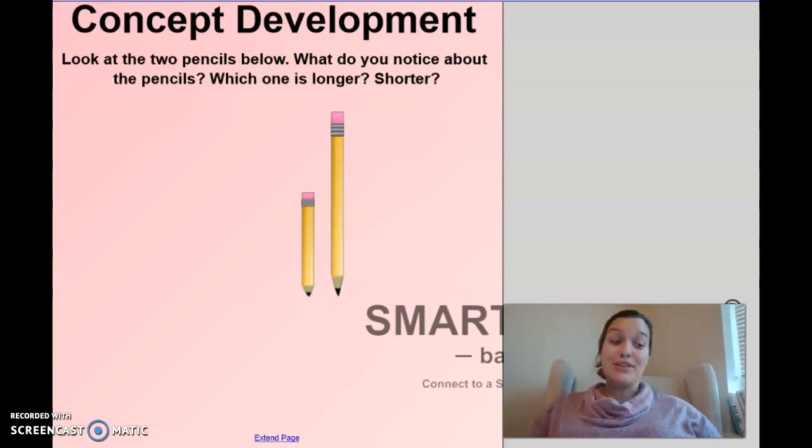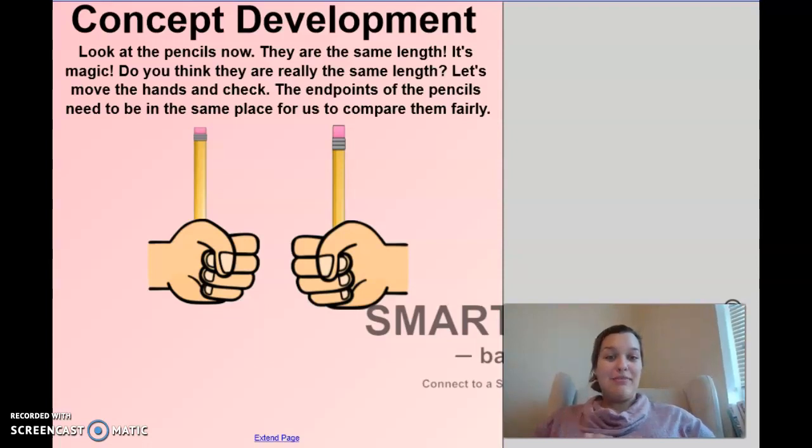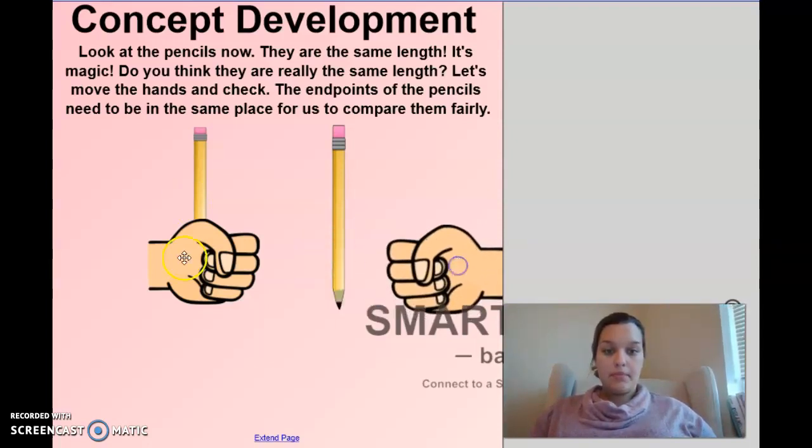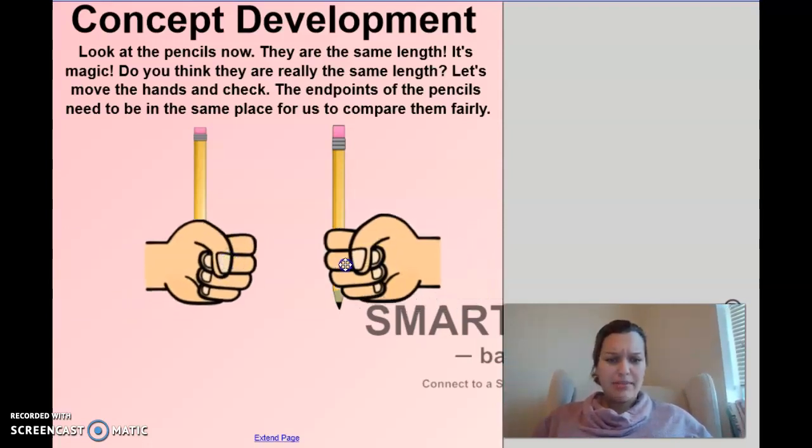I'm going to do another magic trick, okay? See? I told you I was good. I put my hands and I covered the pencils. And I made the pencils the same length. I really didn't do any magic. You want me to move the hands? Okay. You're right. I didn't do any magic. The pencils are not the same length at all.